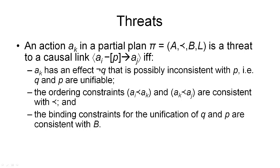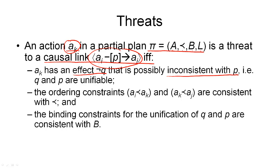Now that you've seen an example of a threat, here's the formal definition of what constitutes a threat. We start off with a plan pi consisting of the four usual components: actions, orderings, variable bindings, and causal links. In this plan, we have an action AK that may cause a threat for a causal link that links an action AI to an action AJ, protecting condition P. We say that AK threatens our causal link if three conditions hold. Firstly, AK must have an effect not-Q that is possibly inconsistent with P. If P and Q are ground, they are possibly inconsistent if they are the same. But if they contain variables, they are possibly inconsistent if P and Q are unifiable — meaning they can be made the same by substituting values for variables.